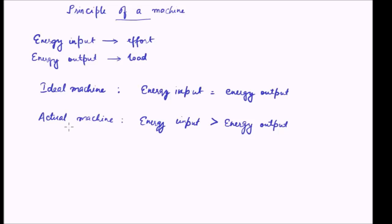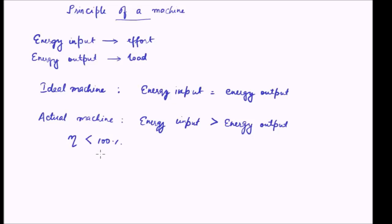For an actual machine, the energy input is greater than the energy output. Conversely, the efficiency of an actual machine is less than 100%, because efficiency is work output divided by work input, or energy output divided by energy input. Since output is less than input, efficiency is less than 1 as a fraction, or less than 100% in terms of percentage.